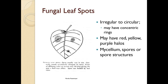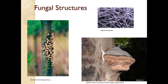Leaf spots are going to be irregular to circular, may have concentric rings that look like bullseyes, and may have red, yellow, or purple halos. You may see mycelium, spores, or spore structures. Hyphae are branching filaments that make up the mycelium of the fungus — they absorb nutrients from the environment and transport them to other parts of the fungal body. On the left here we have white pine blister rust — these are signs, the fruiting bodies. You have a conch on the right-hand side too, which is a sign that there is disease on the inner portion of the trunk, meaning these are already dead or dying.